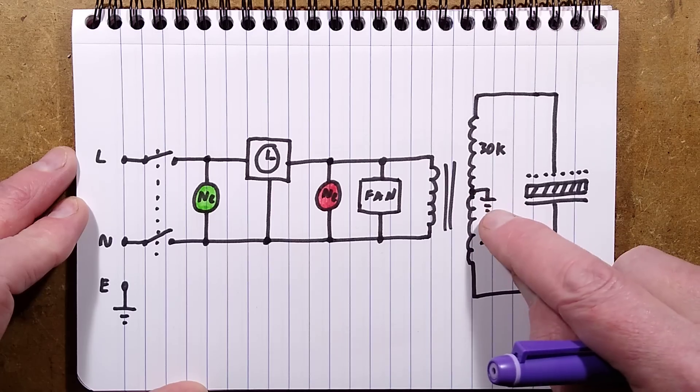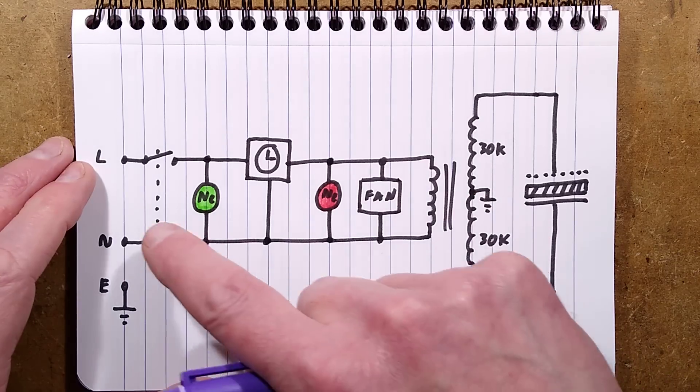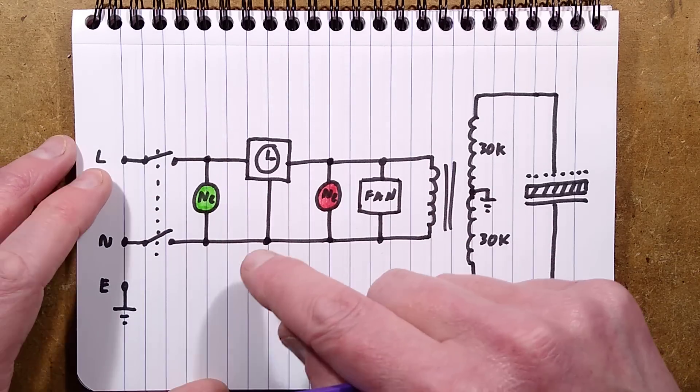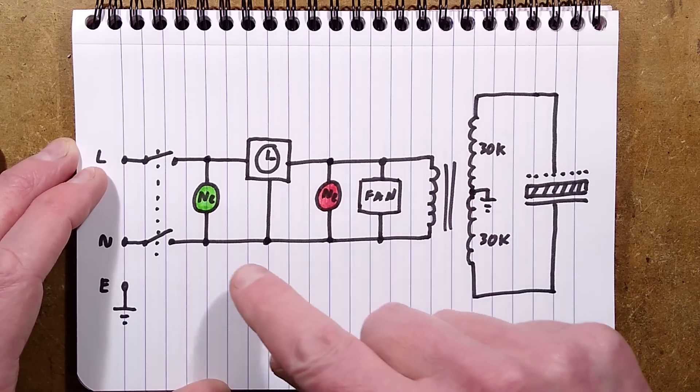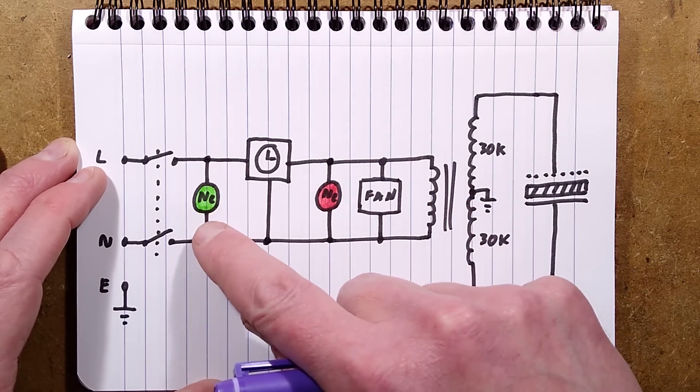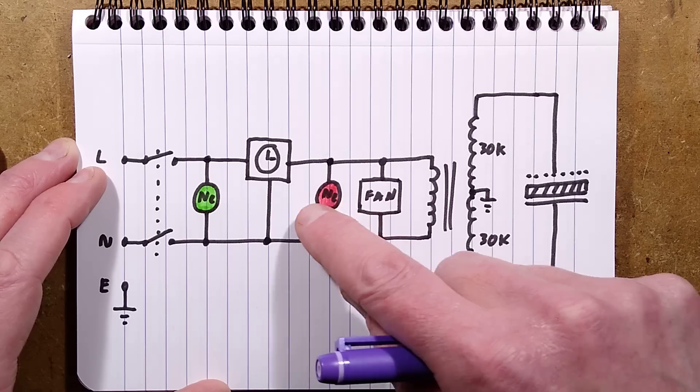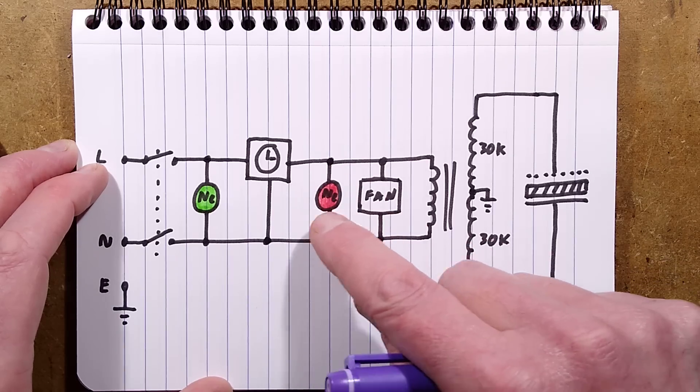So we've got the live and neutral coming in here and the earth for the chassis, but also a center tab earth for the transformer. It goes through an isolator for safety. That's interlock the lid, so the only way you can open the lid is to turn it off before you can open it. We've got a green neon indicator, the time switch, and then a red neon indicator to show that the unit's active.